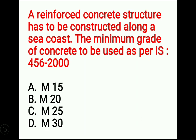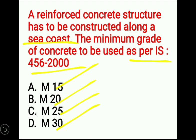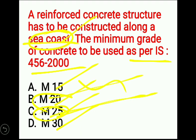Fifth question: a reinforced concrete structure has to be constructed along a seacoast. The minimum grade of concrete to be used as per IS 456-2000 is? The four options are: M15, M20, M25, M30. Please remember: the minimum grade of concrete as per IS 456-2000 in general is M20. However, the condition given is that the structure is to be constructed in a seacoast, so the minimum grade of concrete is M25.